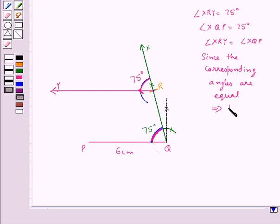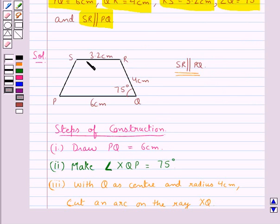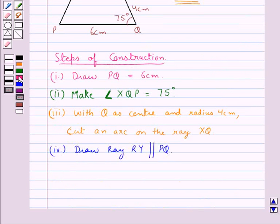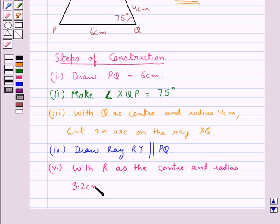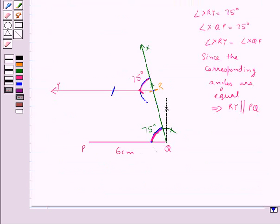Next, we need to make RS equal to 3.2 centimeters. So our next step would be with R as the center and radius 3.2 centimeters. So this is the arc of radius 3.2 centimeters from R as the center. Take this point as point S.